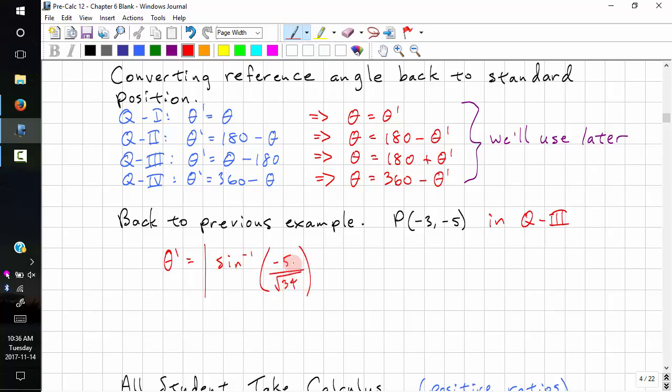Looking back to our previous example in quadrant 3. Theta prime. We always designate our reference angle with a prime notation. It's the absolute value of the inverse sine negative 5 over root 34. This is the absolute value of negative 59 degrees. So theta prime equals 59 degrees. The standard positioning is in quadrant 3, so we look at quadrant 3, it's 180 plus theta prime. So that's plus 59, so we have 239 degrees.